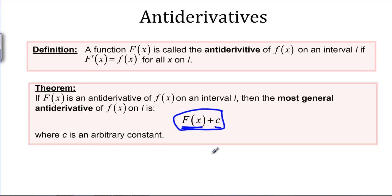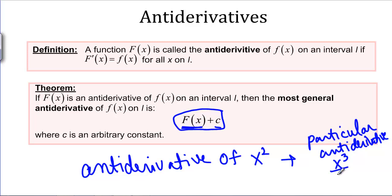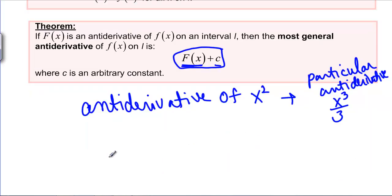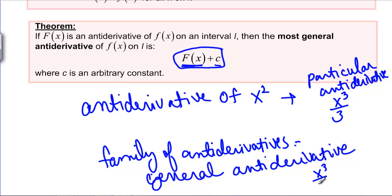This tells us that the family of all antiderivatives is one antiderivative plus a constant — they're all the same except for a constant. So if we're looking for the antiderivative of X squared, a particular antiderivative is X cubed over 3, and the general antiderivative is X cubed over 3 plus C. All functions of the form X cubed over 3 plus C have the derivative X squared, and there are no other functions not of this form that have the derivative X squared.